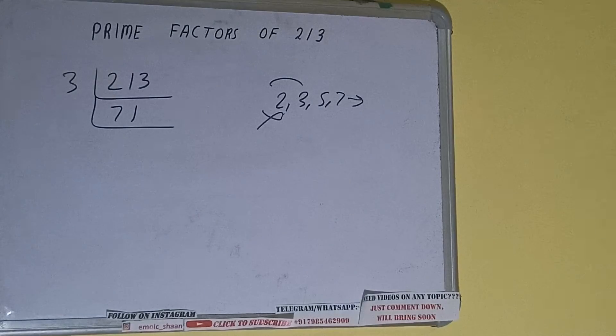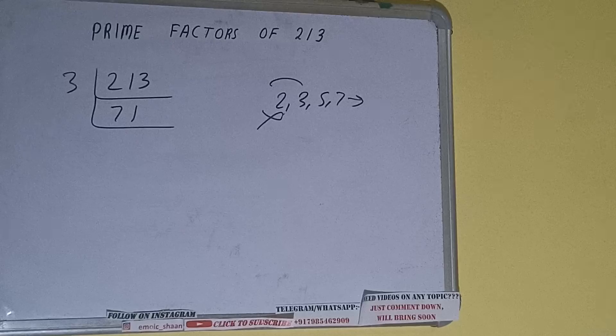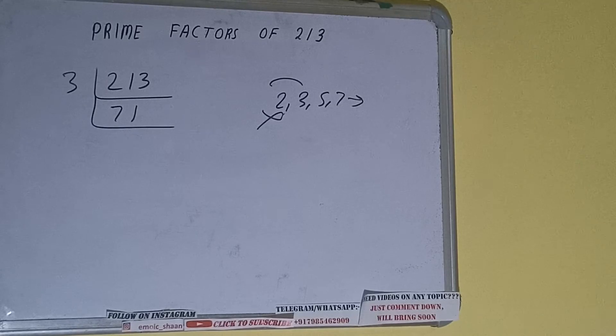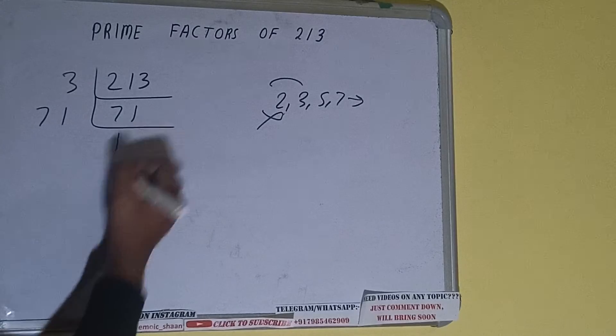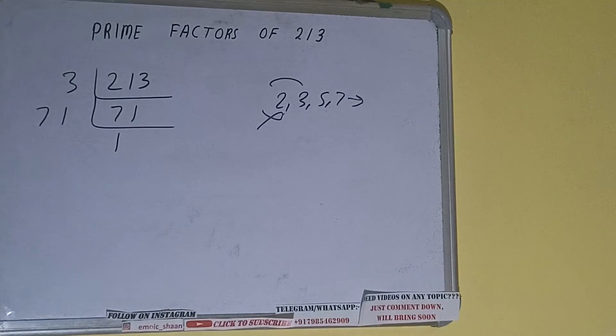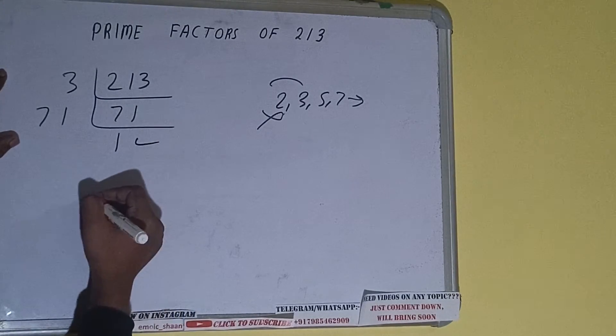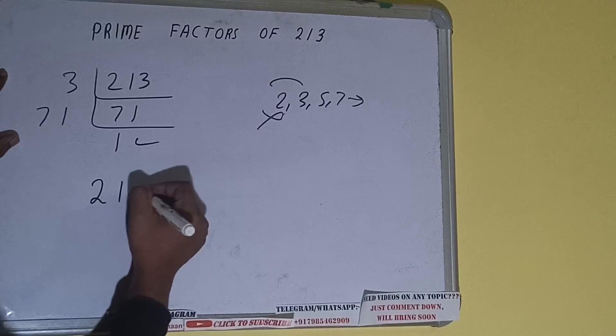So it is only divisible by itself, that is 71. And once we do so, we'll be getting one. Once we get one, we need to stop and do one last thing: the prime factors of 213 equals multiplying whatever we have on the left-hand side, that is 3 times 71.